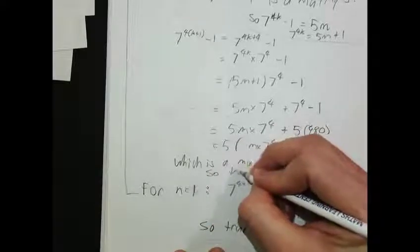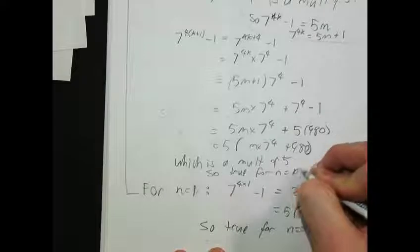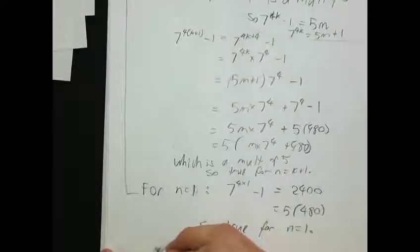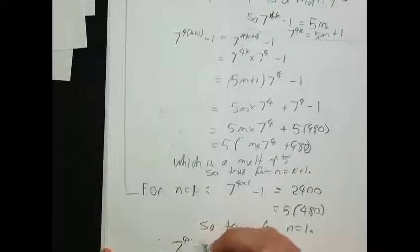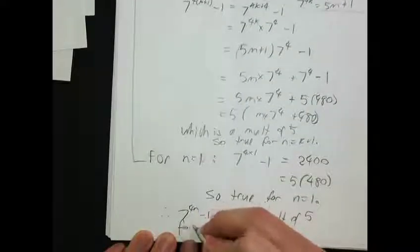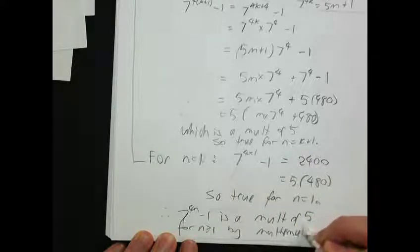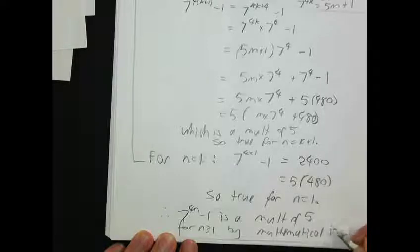True for N=K+1. Therefore 7^(4n)−1 is a multiple of 5 for all n≥1 by mathematical induction. The key in this one is that I had to figure out a way of substituting the inductive hypothesis into the expression for the next case.